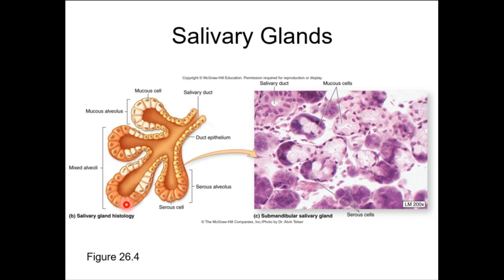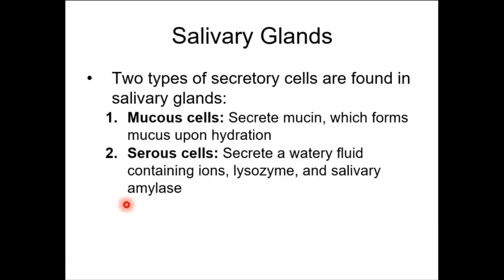Know about salivary gland structure: mucus cells secrete mucin, while serous cells secrete salivary amylase along with ions and lysozyme. Lysozyme is immunological — it helps break down pathogens you ingest. The oral cavity is a very convenient entry point for a lot of bacteria, so there's no such thing as the five-second rule. Bacteria are not waiting five seconds.